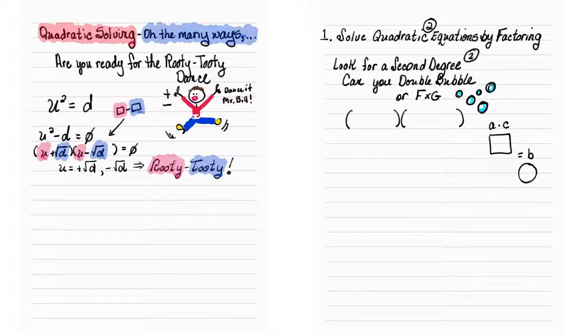Now, I realize d is not a perfect square, but that doesn't mean you can't do the difference of two squares. Plus the square root of d and u minus the square root of d. And when you set that all to zero, you would find that you get a positive square root d and a negative square root d. And that's kind of like the rooty-tooty.